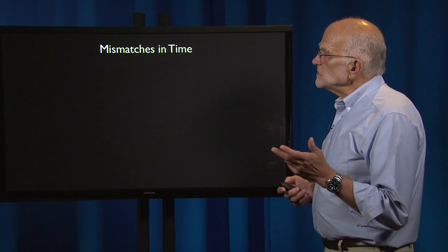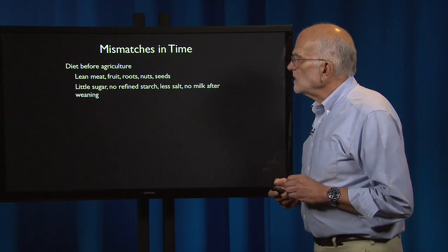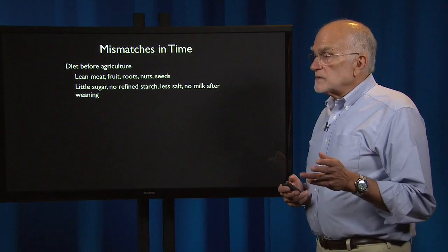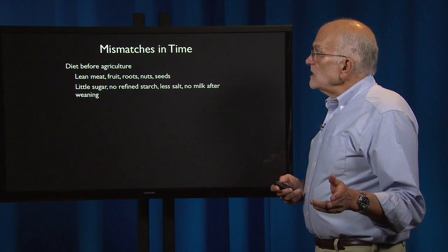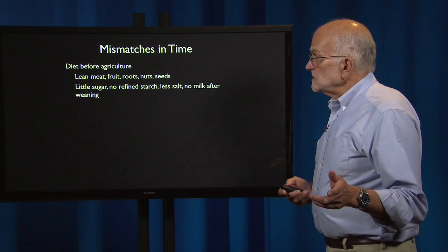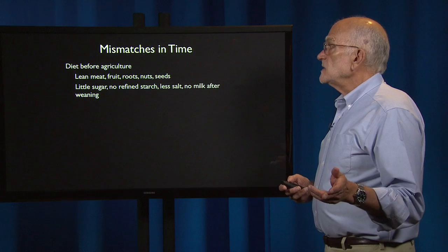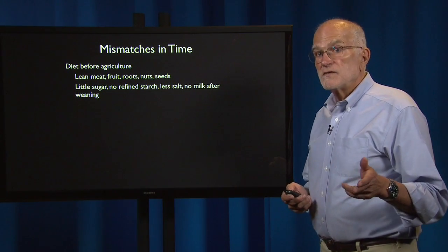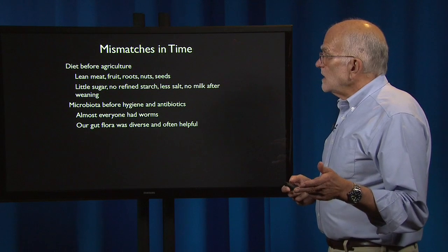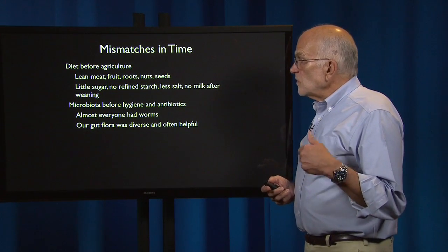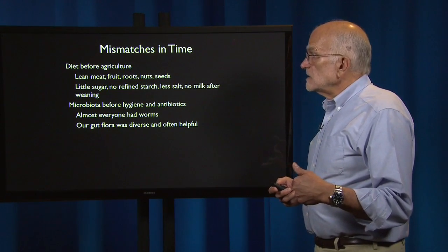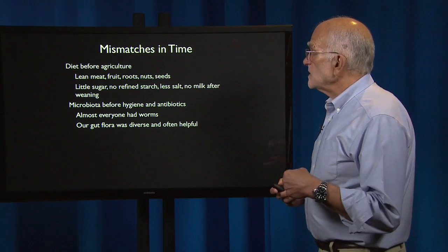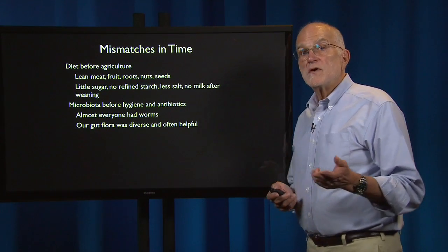Let's first consider mismatches in time. Our diet before agriculture certainly was higher in lean meat, fruit, roots, nuts, and seeds, and had less sugar, no refined starch, less salt, and there was no milk after weaning. Our microbiota, before hygiene and antibiotics, was more diverse. Almost everyone had worms, and our gut flora was diverse and was often helpful.